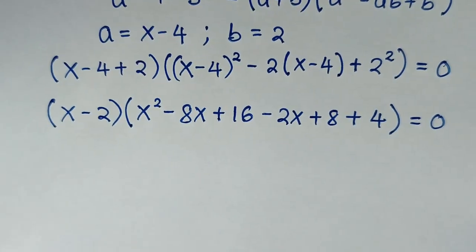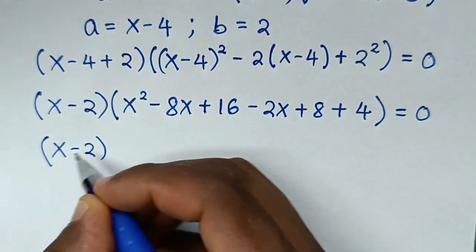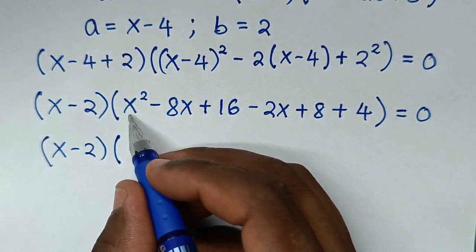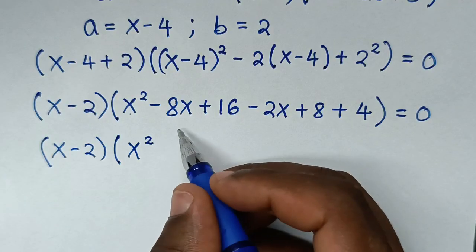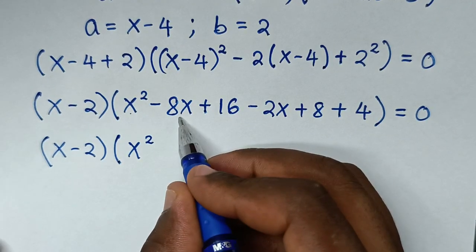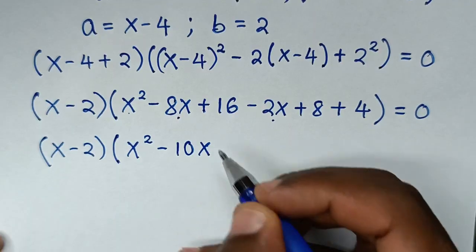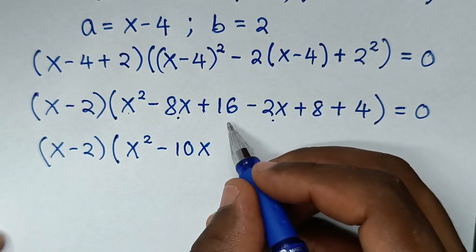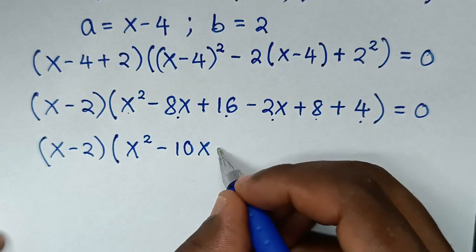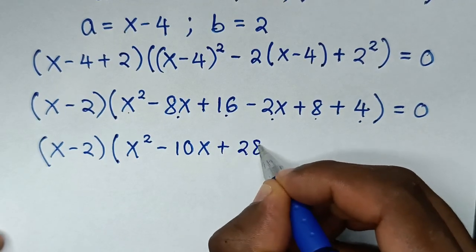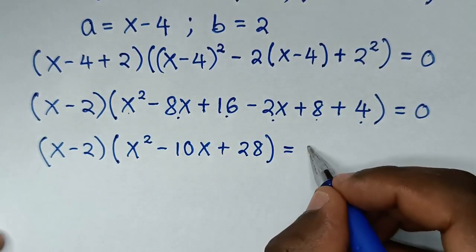Collecting like terms in the second bracket: x² stays. For x terms: -8x - 2x = -10x. For constants: 16 + 4 + 8 = 28. So we have (x - 2)(x² - 10x + 28) = 0.